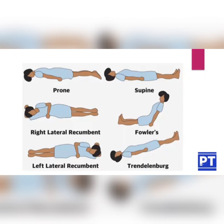When the patient is turned to the right side, it is known as right lateral recumbent, and when turned to the left side, it is left lateral recumbent. Fowler's position means the patient is supine but the head is higher than the feet, whereas in Trendelenburg position the feet are higher than the head, but the patient remains supine.